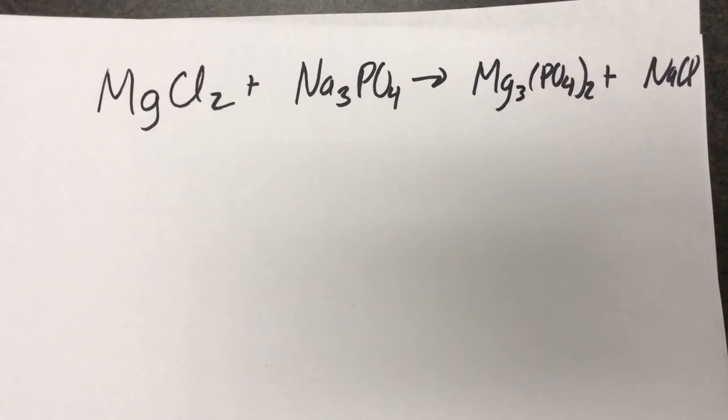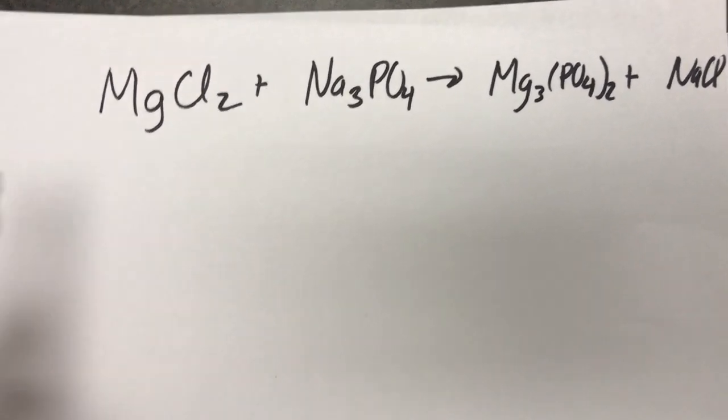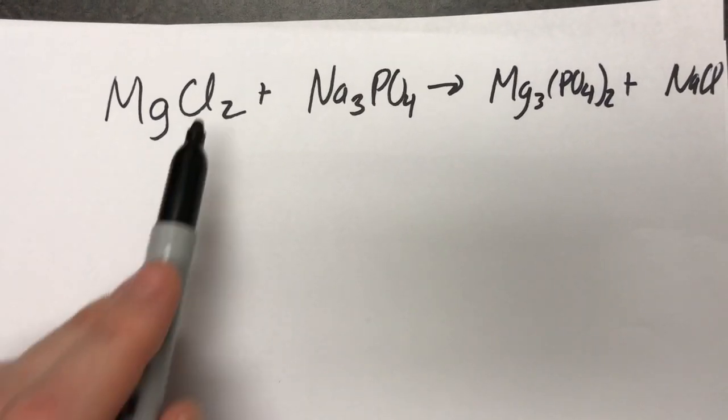All right now we need to look for the thing that's alone. I see nothing that's alone. So your question is, okay magnesium, we got one here and three there. That's not too bad, we could change that pretty quickly.